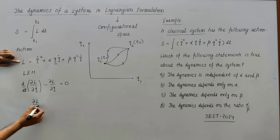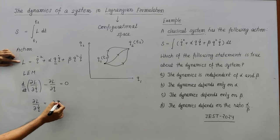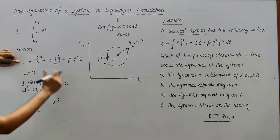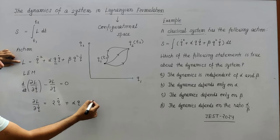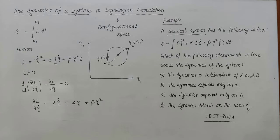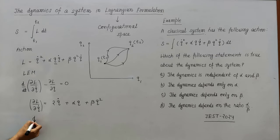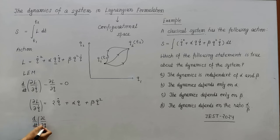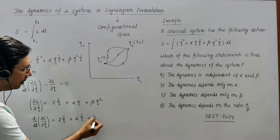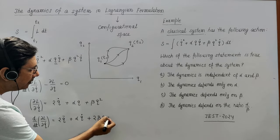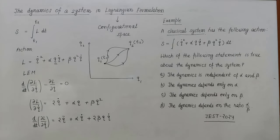Find out ∂L/∂q̇ first. q̇ appears in each term: this gives 2q̇, then +αq, and +βq². Now take the time derivative d/dt(∂L/∂q̇). This will be: 2q̈ + αq̇ + 2βqq̇.